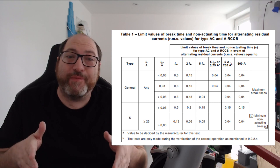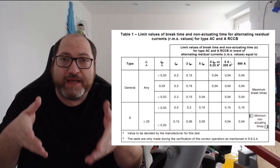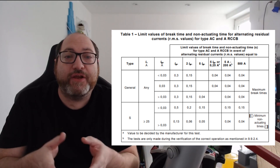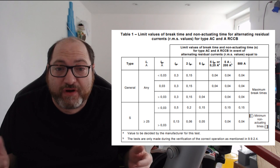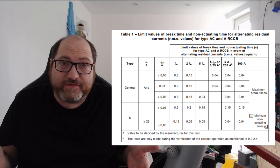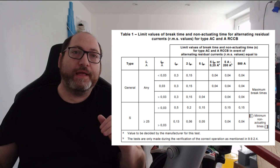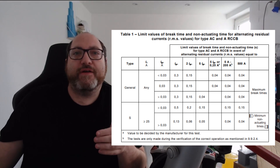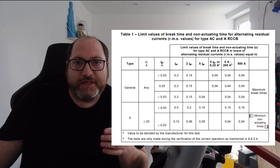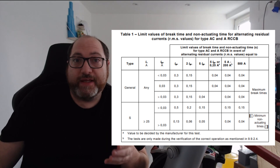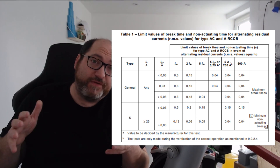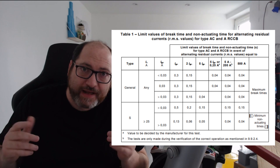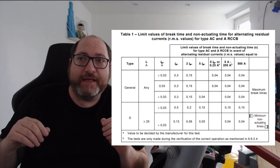It actually has this in the table under it as a note A — it says the value is to be decided by the manufacturer for the test. So what Hager decided to do was update their RCCBs to incorporate the new 250 milliamp option. The problem with that is it resulted in some change in the use or wording of the wiring regulations.